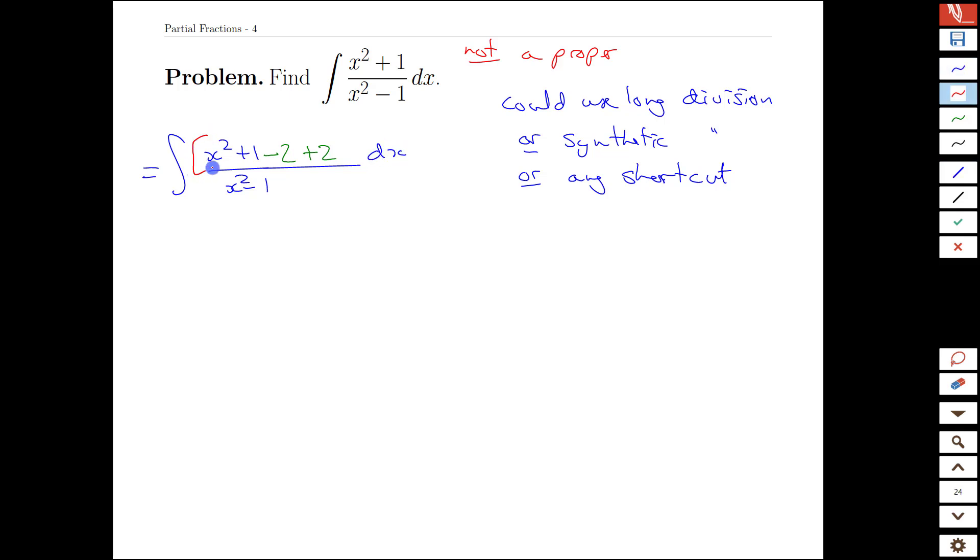And if we just group it in a way that's convenient for us, we end up with x squared minus one here plus two. And that means we get an integral of one plus two over x squared minus one. So this now is a proper rational function here. We have a constant over a quadratic.